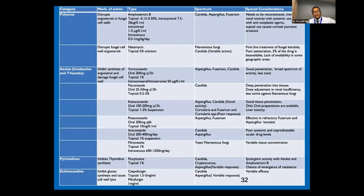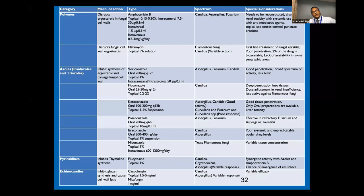There are many antifungal drugs recommended for fungal keratitis, broadly classified into polyenes, azoles, pyrimidines, and echinocandins. Polyenes and azoles inhibit cell wall synthesis. Pyrimidines and echinocandins inhibit thymidine and glucan synthesis, thereby affecting the metabolism of the fungus and ultimately leading to cell death.